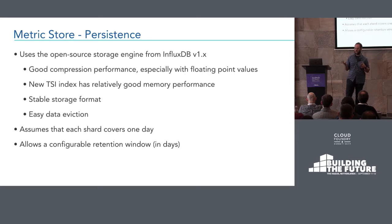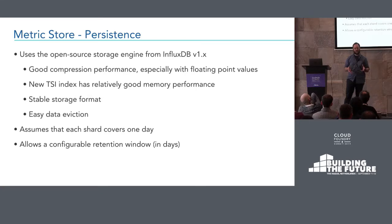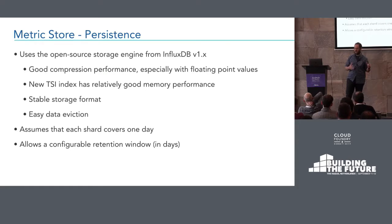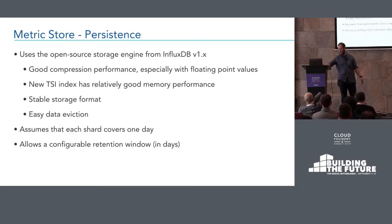InfluxDB lets you define how big your retention windows are and how large your shards are on disk — what unit of time each physical shard covers. We've gone with the decision that each shard is one day, because most people we've talked with measure stored data in weeks or maybe months, and we want to drop data relatively easily. We default to six weeks of data — 42 days — and as each day expires, we just drop the oldest day, giving you a good rolling window of storage. This is something users don't have to decide, and InfluxDB's time-period-based storage makes it easy for us to drop data as it expires.